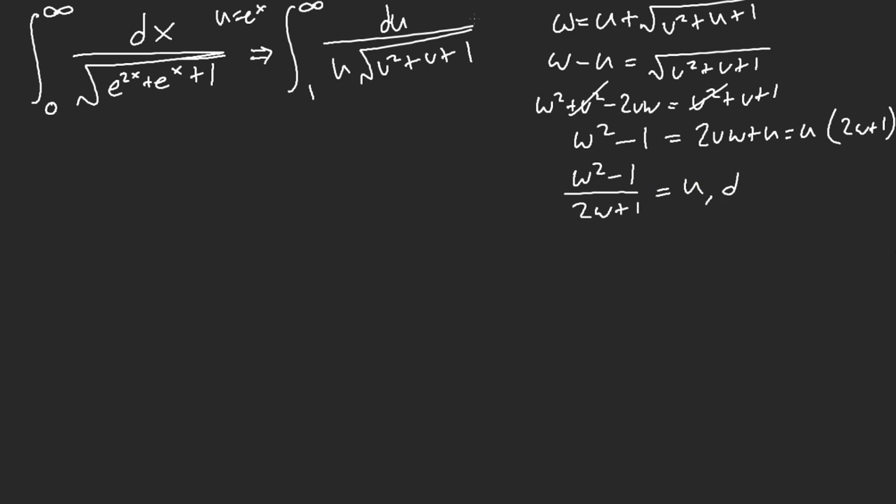And how do you find du? Quotient rule. Yes. This is annoying. Let's see, this is 2w, 2w plus 1 minus 2 times w square minus 1.